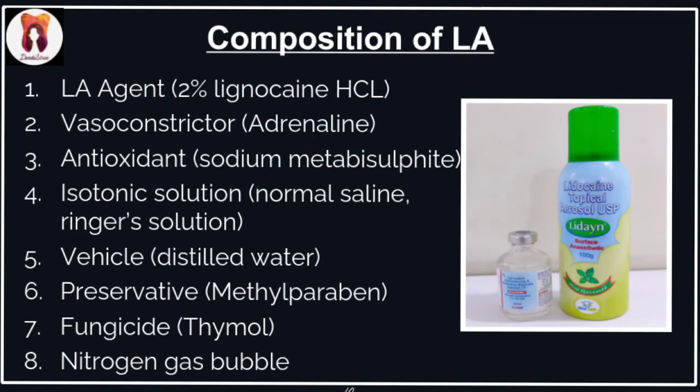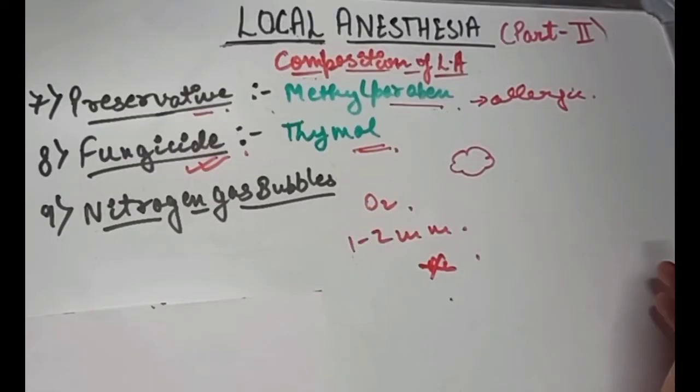Summarizing the composition of LA: first, we add the LA agent, that is lignocaine hydrochloride, which has vasodilatory effect and increases bleeding at the site of injection and is also quickly absorbed and removed from the injection site. So we add the vasoconstrictor, mostly adrenaline. But vasoconstrictor oxidizes easily and decreases the shelf life of LA. So we add an antioxidant, that is sodium metabisulfite. This competes for the available oxygen and converts into sodium metabisulfate, which is acidic and might cause burning sensation to the patient. To neutralize the LA solution, saline, ringer solution, and a weak base is added. This decreases the pH of the LA solution. For dilution and to increase the volume of the solution, distilled water is added. And for preservation, bacteriostatic agents like methylparaben and fungicide like thymol are added. So that is all about the composition of LA.